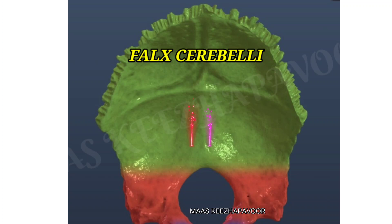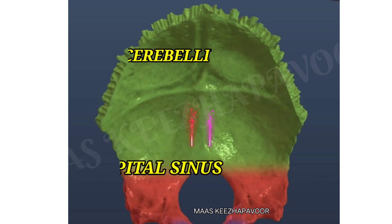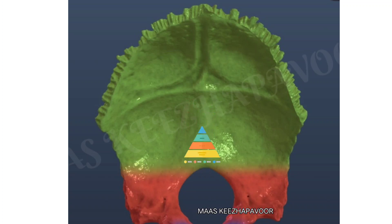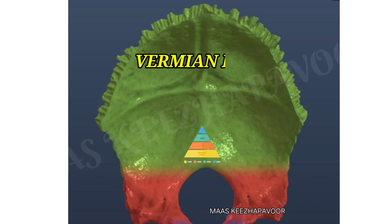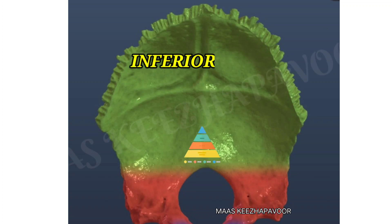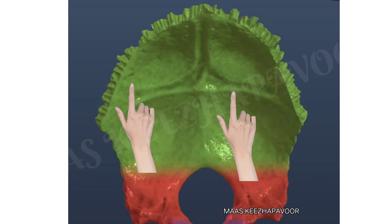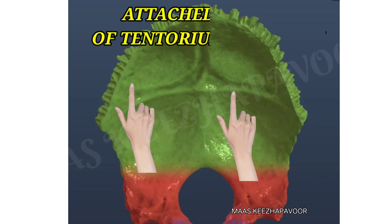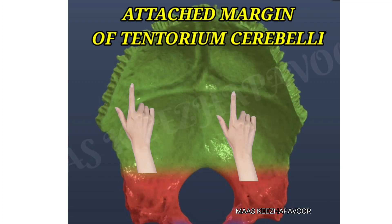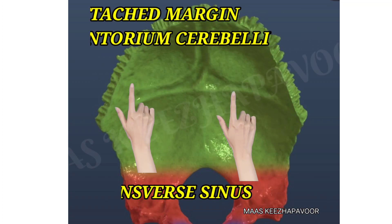The lower end of the internal occipital crest forms the boundary for a triangular depression called the vermian fossa, which lodges the inferior vermis of the cerebellum. The transverse lines from the internal occipital protuberance give attachment to the attached margin of the tentorium cerebelli, and are related to the transverse sinus.